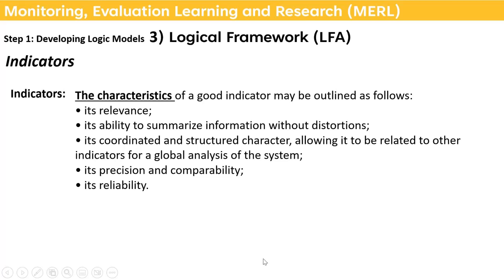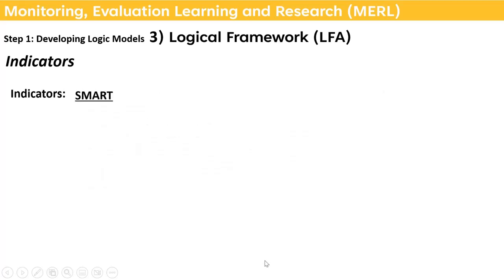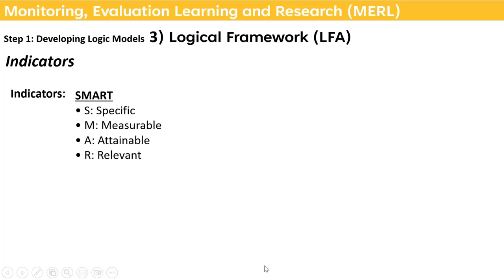Indicators should be precise, with comparability across sources. Data sources should be reliable. You will have heard the word SMART indicators. SMART stands for: S — Specific, M — Measurable, A — Attainable or Achievable, R — Relevant, and T — Time-bound. Let me explain these five characteristics.